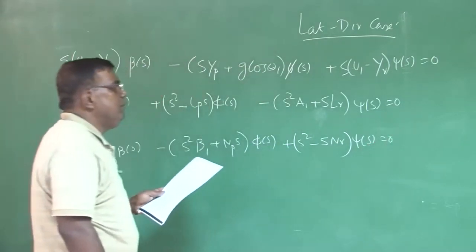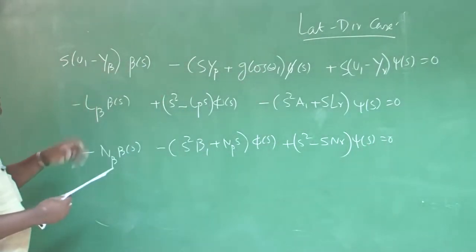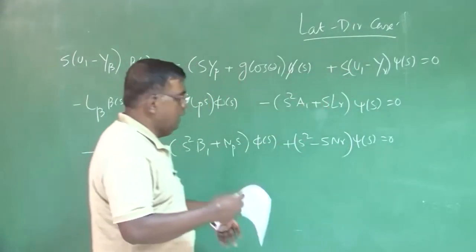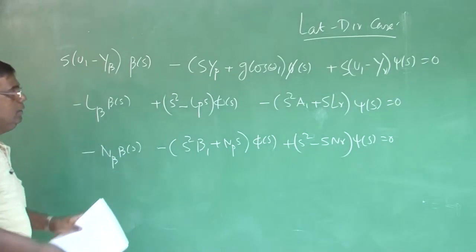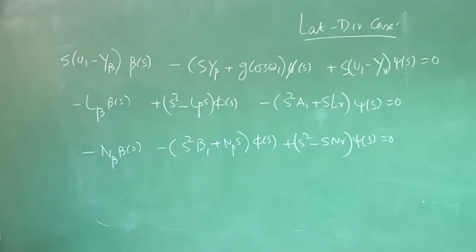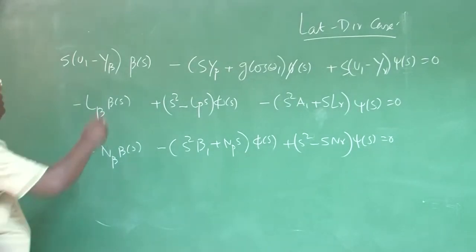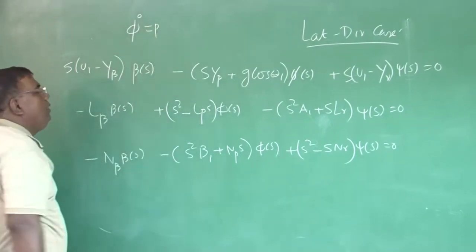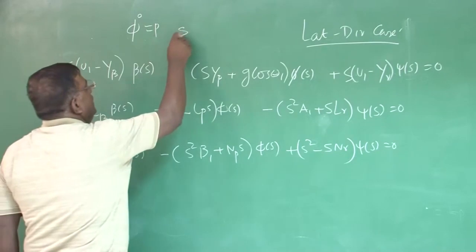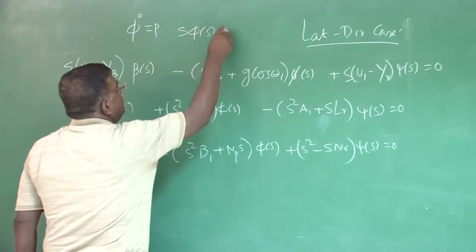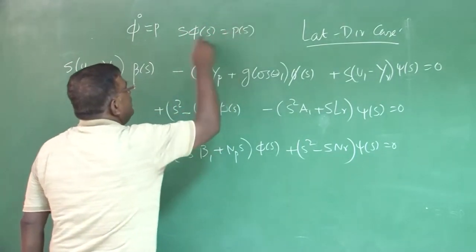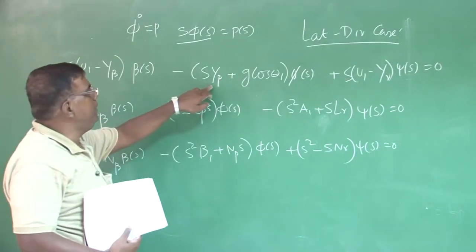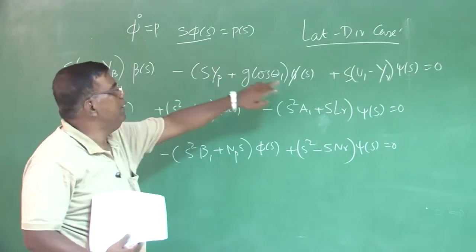So these are free response equations. Remember the stability matrix: this into beta, this into phi, this into psi. When you say phi, please remember phi-dot equal to p has been modeled. So s·phi(s) is p(s). So wherever p(s) is there, you can replace it by s·phi(s). That is why you could see y_p into p becomes y_p into s·phi(s).